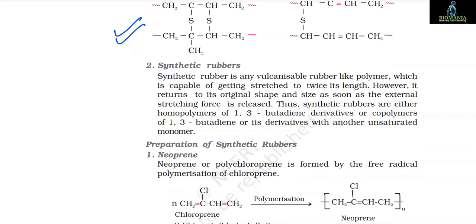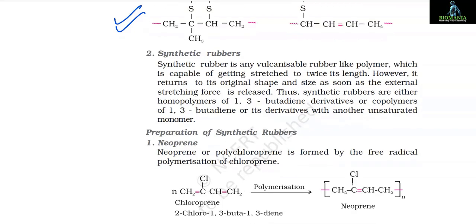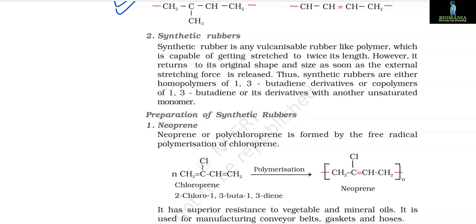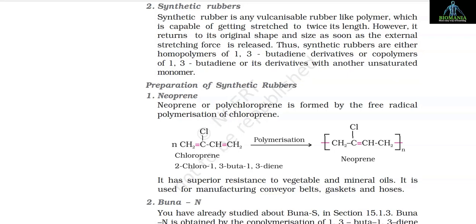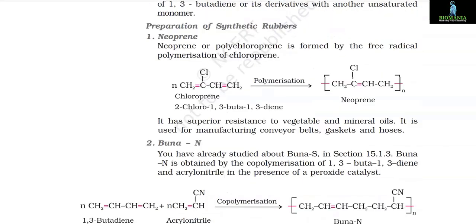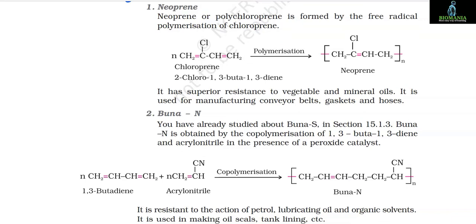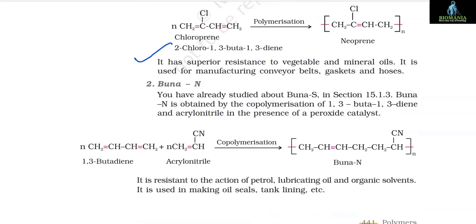2. Synthetic Rubbers: Synthetic rubber is any vulcanizable rubber-like polymer which is capable of getting stretched to twice its length, but returns to its original shape and size as soon as the external stretching force is released. Synthetic rubbers are either homopolymers of 1,3-butadiene derivatives or co-polymers of 1,3-butadiene or its derivatives with another unsaturated monomer. 1. Neoprene: Neoprene or polychloroprene is formed by the free radical polymerization of chloroprene (2-chloro-1,3-butadiene). nCH₂=CCl–CH=CH₂ → (–CH₂–CCl=CH–CH₂–)ₙ (neoprene). It has superior resistance to vegetable and mineral oils and is used for manufacturing conveyor belts, gaskets and hoses.